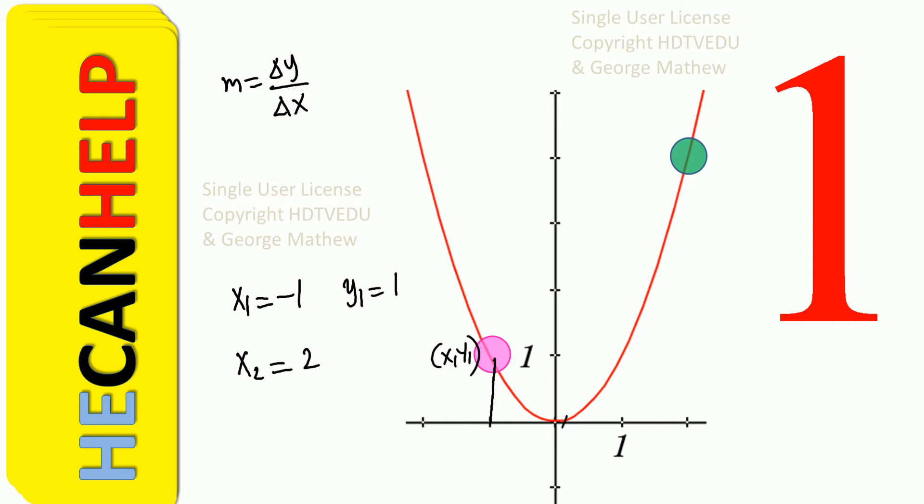When you go to x equal to 2, so this is x equal to 1, and this is x equal to 2. And when you go to x equal to 2, you see that the y value is positive 4. So y2 is then positive 4.